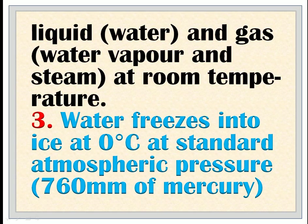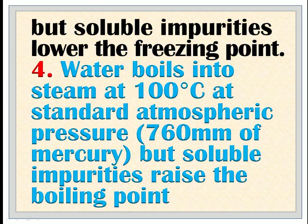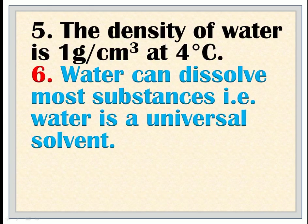3. Water freezes into ice at zero degrees Celsius at standard atmospheric pressure (760 mm of mercury), but soluble impurities lower the freezing point. 4. Water boils into steam at 100 degrees Celsius at standard atmospheric pressure (760 mm of mercury), but soluble impurities raise the boiling point. 5. The density of water is 1 gram per centimeter cubed at 4 degrees Celsius. 6. Water can dissolve most substances; that is, water is a universal solvent.